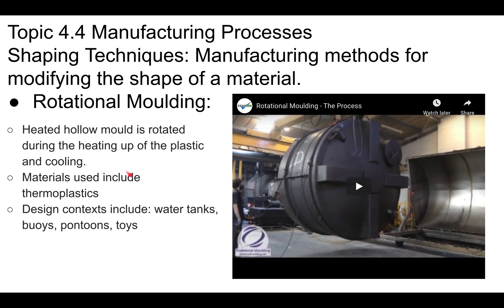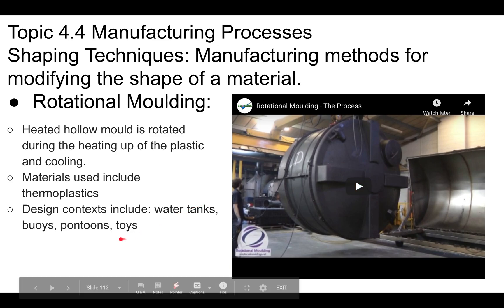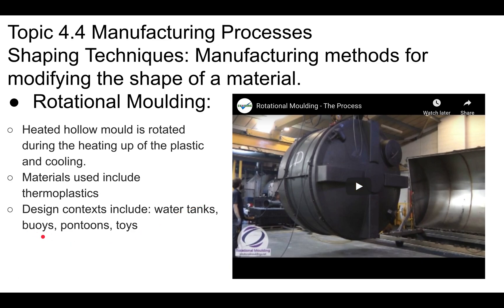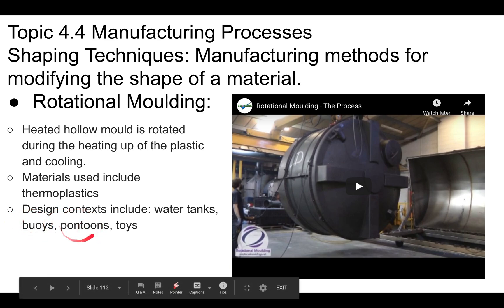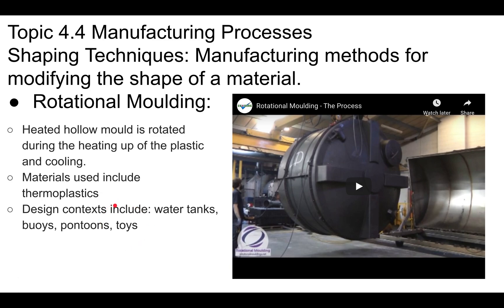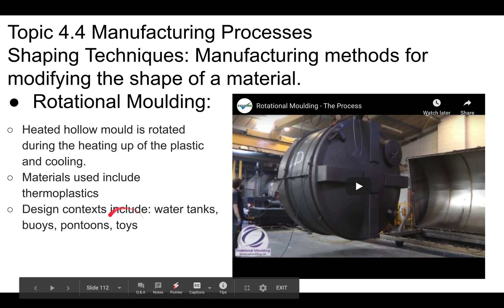Next we have rotational molding. You have a large mold — in this case making a big plastic water storage container — and it's made out of metal. You place it inside a rotation chamber that rotates the mold. You put all the plastic inside, rotate it, and the heating and rotation melts the plastic to form the product. These are thermoplastics. Large things like water tanks, buoys, pontoons for boats, and large plastic toys are made this way.